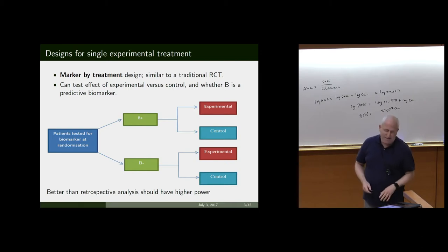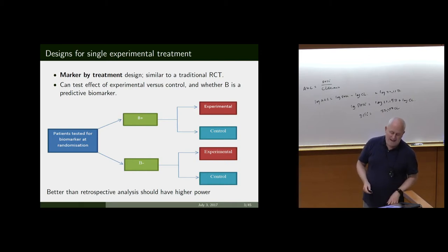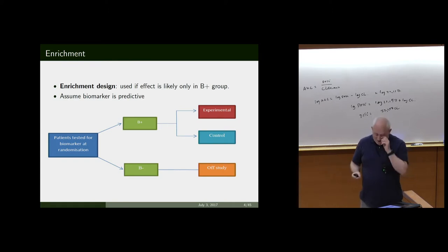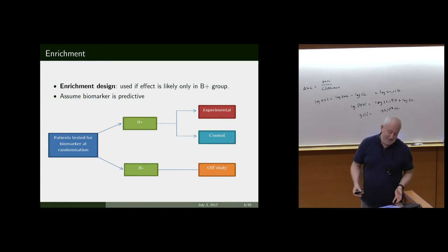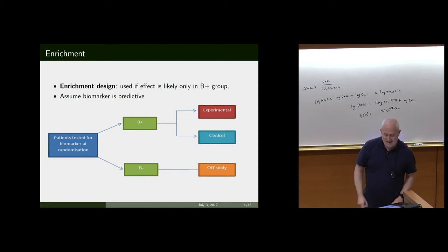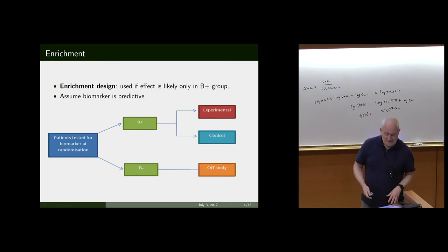These are huge trials, and often people say they don't want to waste time on biomarker-negative patients — they want a pure enrichment trial. Obviously you can't then estimate the interaction, and it's hard to argue when someone has a small budget why they would spend money on powering an interaction when they could just test whether treatment works in a biomarker-positive group. It doesn't tell you whether the biomarker is predictive, but they assume it might be.